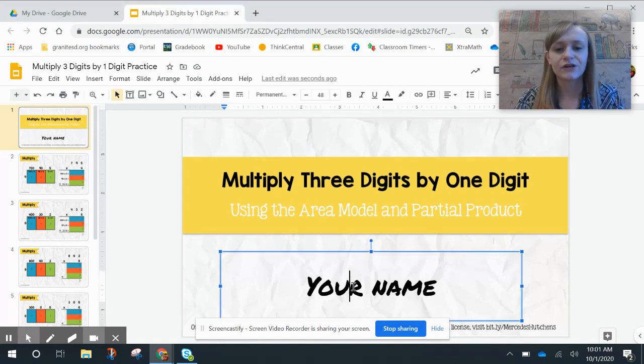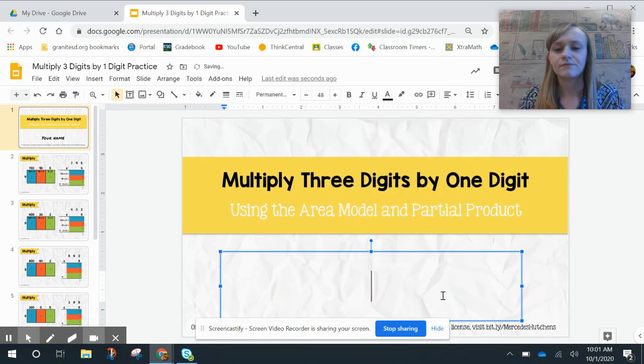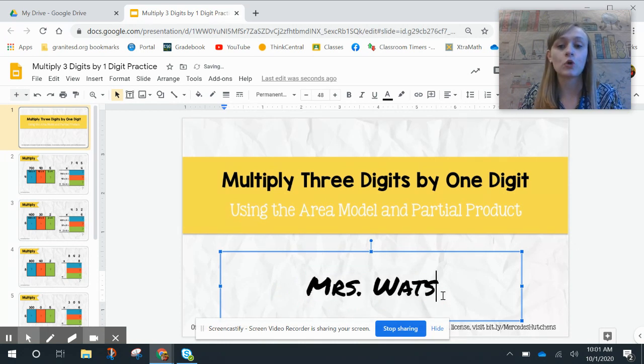On the very first slide, you're going to go ahead and click in the text box where it says your name. You're going to highlight it, backspace, and then type your name in there.